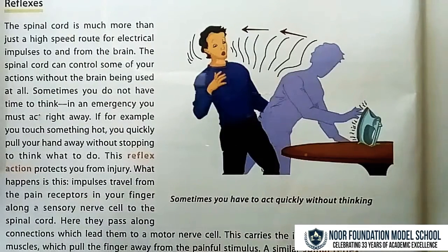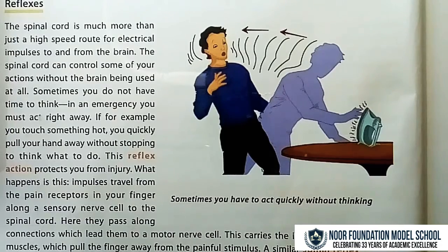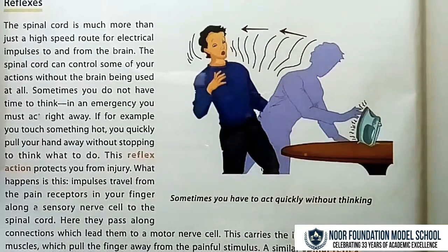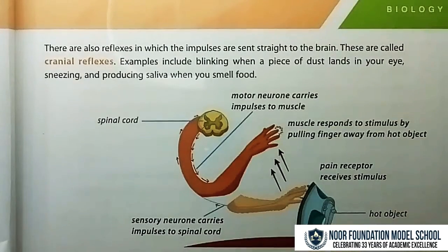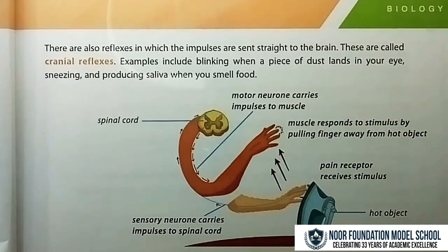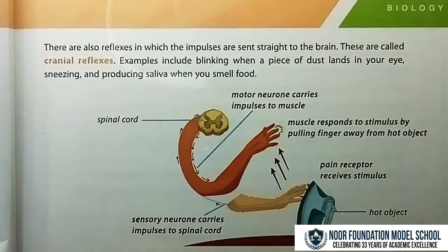There are also reflexes in which impulses are sent straight to the brain. These are called cranial reflexes. Examples include blinking when a piece of dust lands in your eye, sneezing, and producing saliva when you smell food.